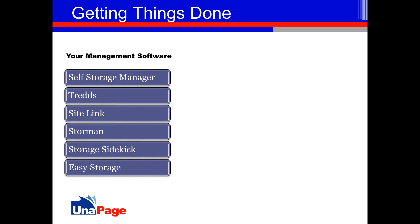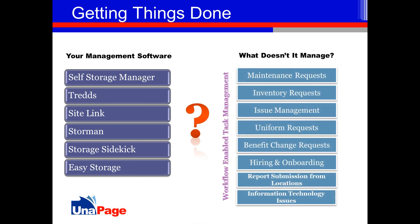You already have software that you use to manage your business, and depending on which product you have, it's going to do a variety of functions — most notably handling the actual rental of your units and possibly insurance. But your business is comprised of a lot more activities than that. When you start looking at things that it doesn't manage, you tend to have a lot of things that fall through the cracks. UniPage is designed specifically to fill all those gaps — it's a very flexible tool.